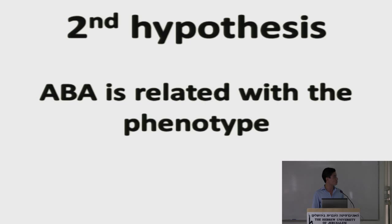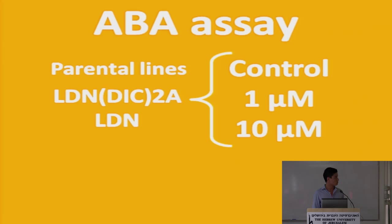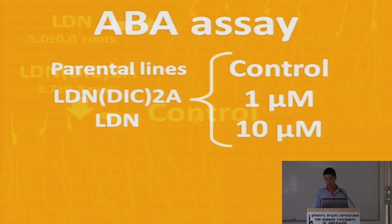My second hypothesis was: if there's a QTL reported with ABA, let's test the parental lines with ABA and see what the response is. So we made an ABA test with the parental lines — the 2A substitution line and the commercial line. The treatments were: control, one micromolar ABA, and 10 micromolar ABA.